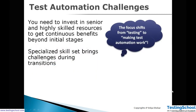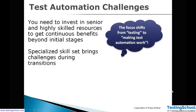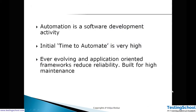Some challenges from generation 1 and 2 are overcome in generation 3 using model-based testing. Working on an automation framework requires skilled resources — you need to invest in senior and highly skilled people for continuous benefits. A specialized skill set, such as developer skills needed to design a page object model framework, is challenging to find in the testing domain. When a skilled person leaves, knowledge transfer is time-consuming.